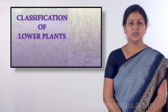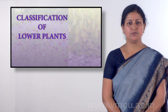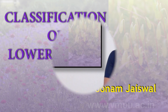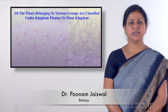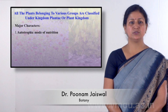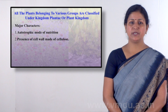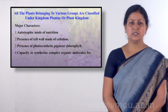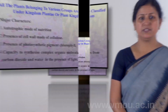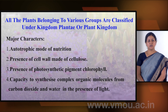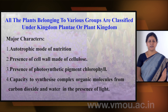I am Dr. Poonam Jaiswal. I will tell you about the classification of lower plants. All the plants are in the kingdom of plants. They have major characteristics: plants are autotrophic mode of nutrition, the cell wall material is made, photosynthetic pigment is made by chlorophyll, they are autotrophs using carbon dioxide and water, and complex organic molecules are made in plants.